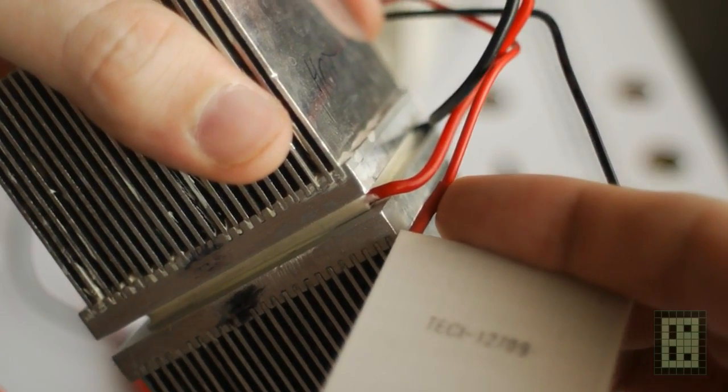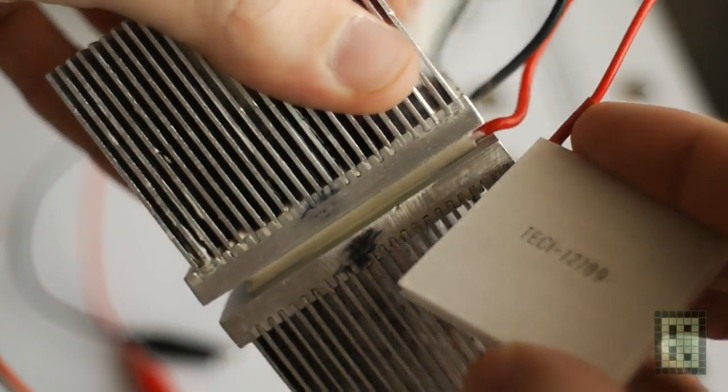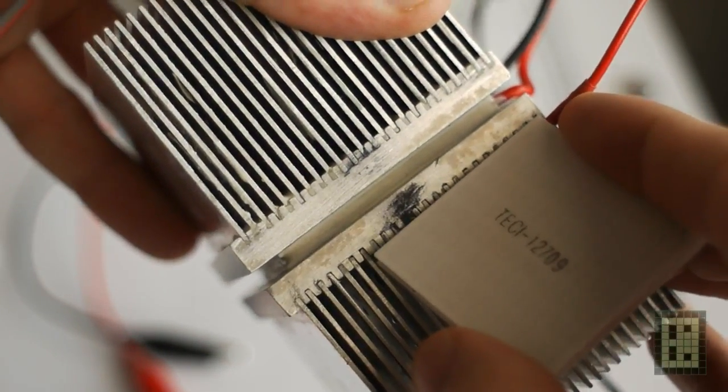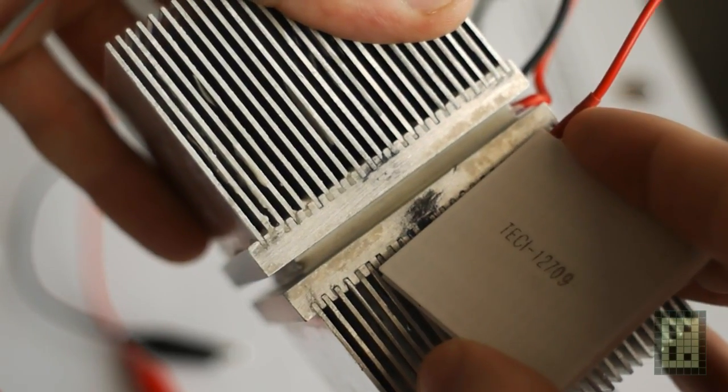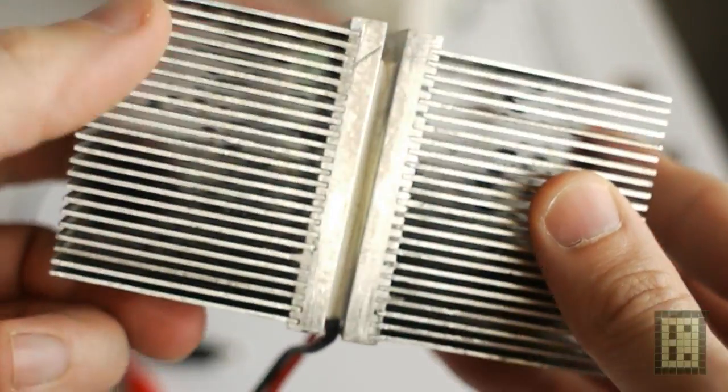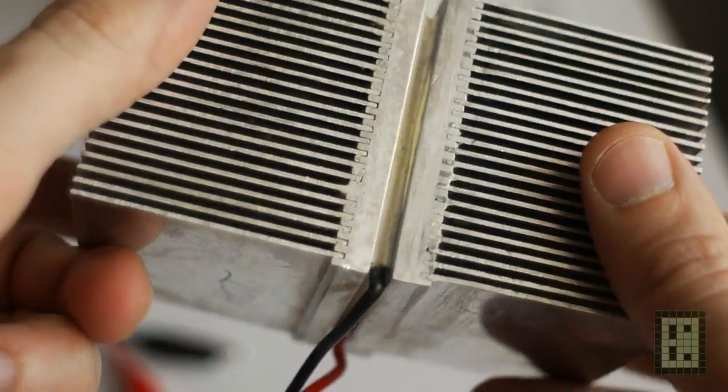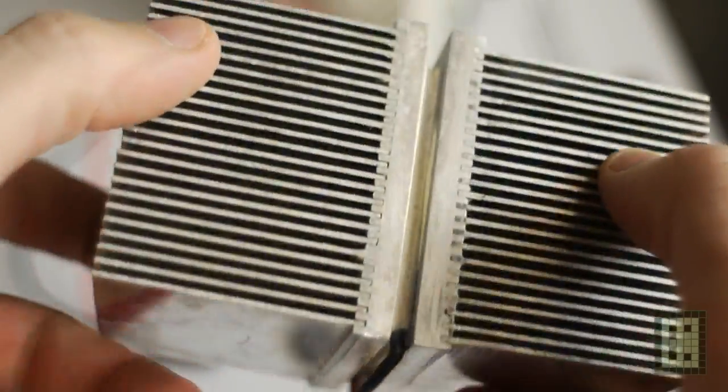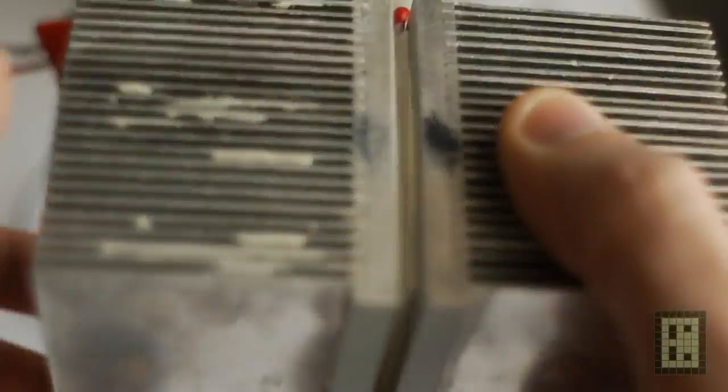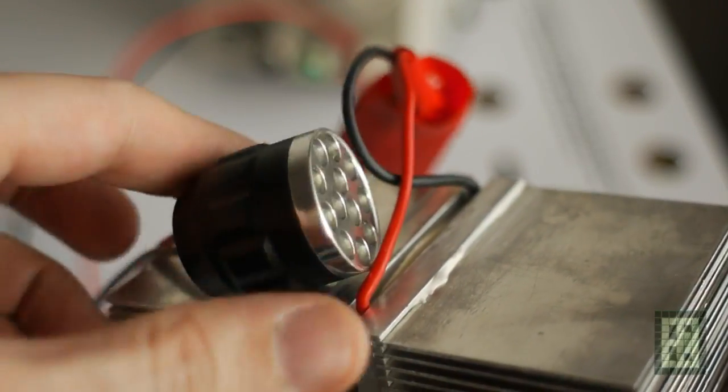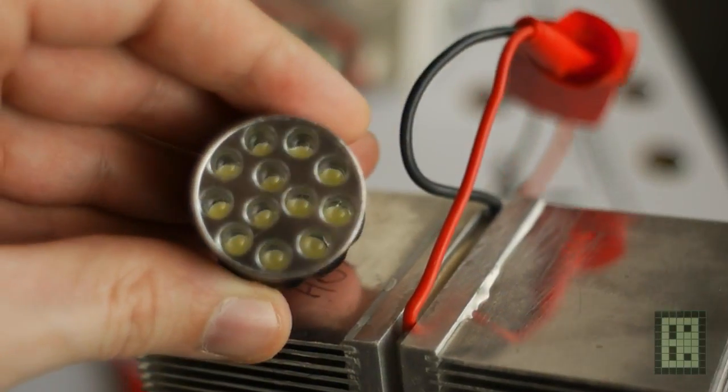In my demonstration of the Seebeck effect, I will use this larger Peltier module and it's glued in between two aluminum heatsinks. I used a thermal adhesive to glue this together, but you could use any epoxy glue - it will be good enough for heat transfer.